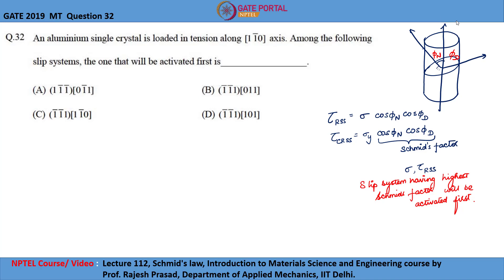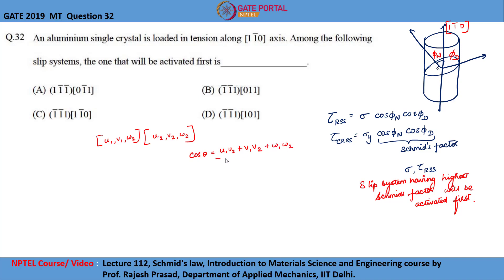It is given that the tensile load is applied along the [1 1̄ 0] axis. We need to find cosφₙ and cosφ_d for each slip system. The angle between directions [u₁ v₁ w₁] and [u₂ v₂ w₂] is given by: cosθ = (u₁u₂ + v₁v₂ + w₁w₂) divided by the square root of (u₁² + v₁² + w₁²) times (u₂² + v₂² + w₂²).